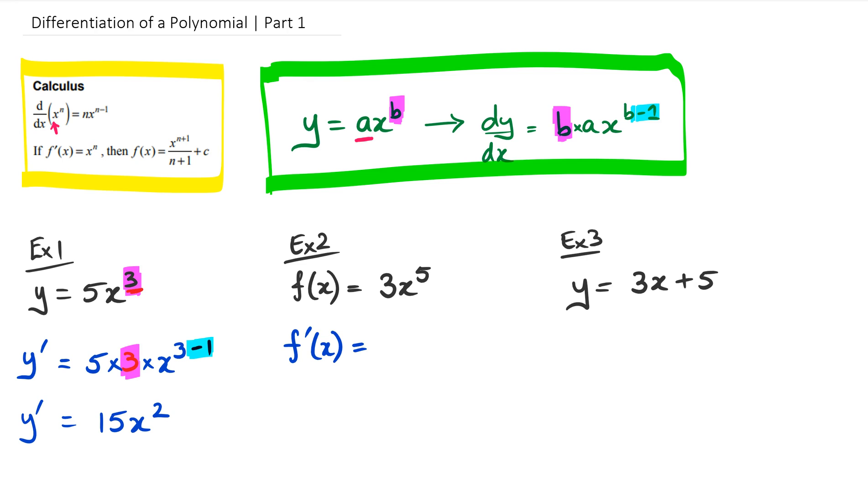So again, I'm going to follow the same steps. I'm going to leave the coefficient in front. So that's going to be 3. And I'm going to multiply by the power, which happens to be 5 in this case. And also multiply by x to the power of 5. But I've got to take away 1 from the power.